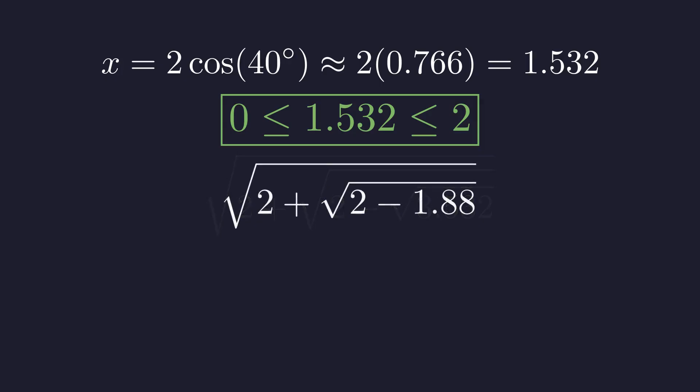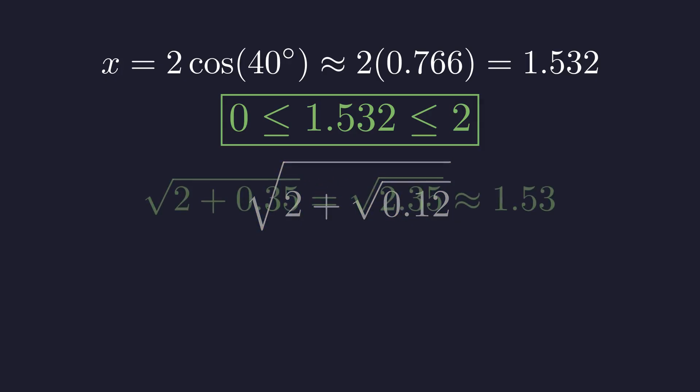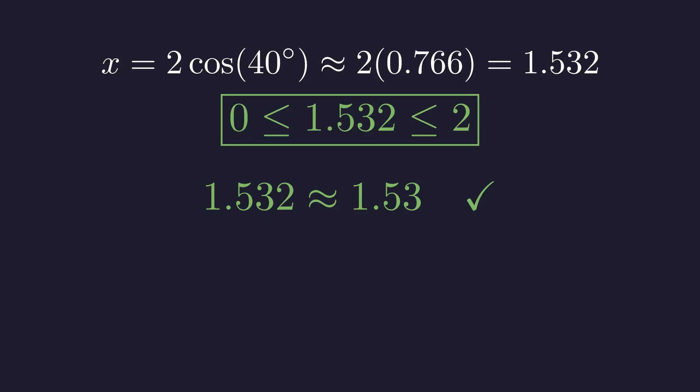2 minus 1.88 gives us 0.12. The square root of 0.12 is approximately 0.35. And finally, 2 plus 0.35 equals 2.35, whose square root is approximately 1.533. Perfect! We get back essentially the same value we started with. Our solution truly satisfies the original equation.